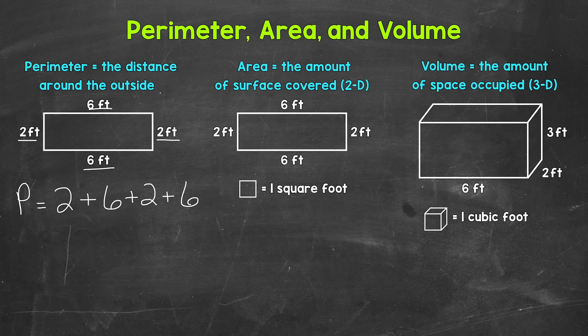For example, if we do 6 plus 6 plus 2 plus 2, that will give us the same thing and the correct perimeter. So now let's add. We have 2 plus 6, that's 8, plus 2 is 10, plus 6 is 16. So the perimeter is 16 feet.